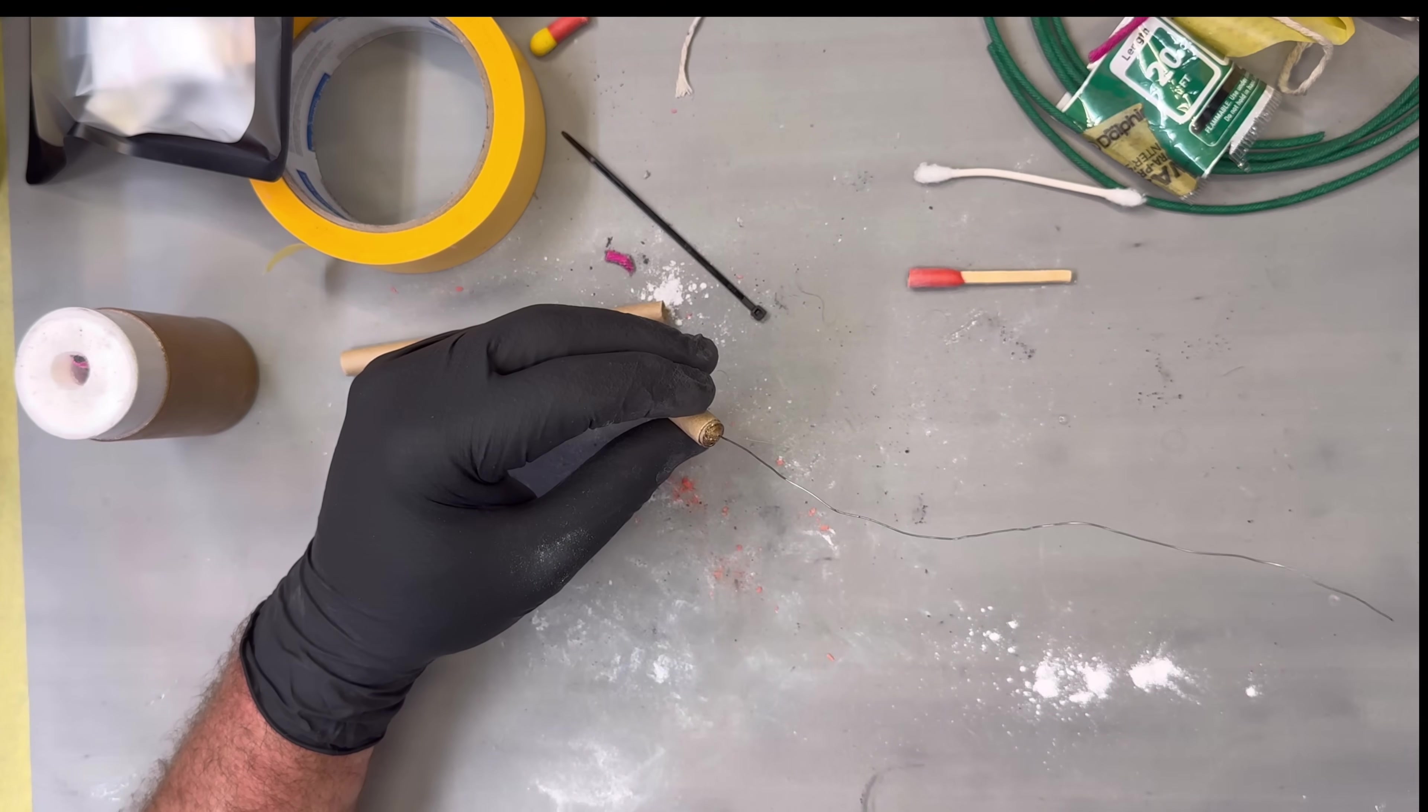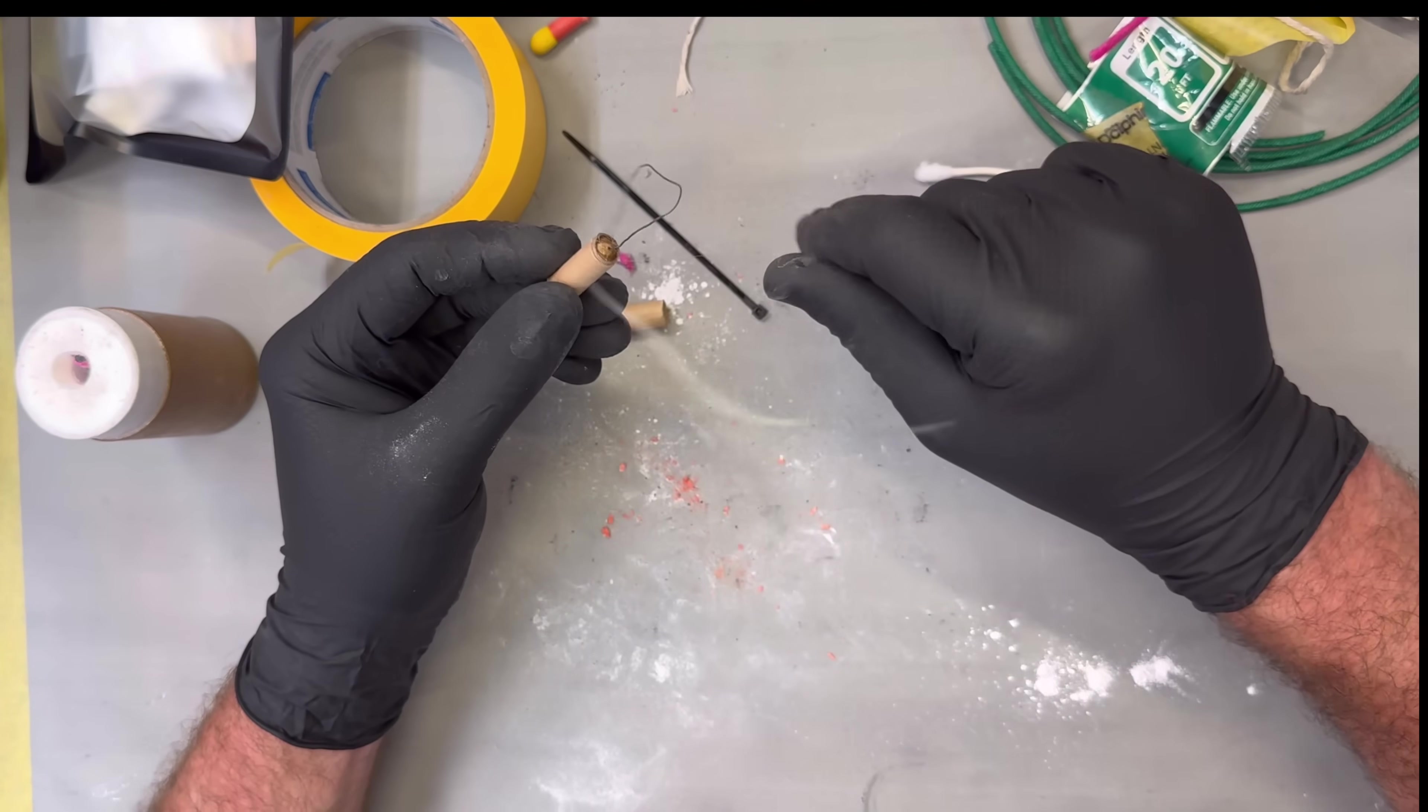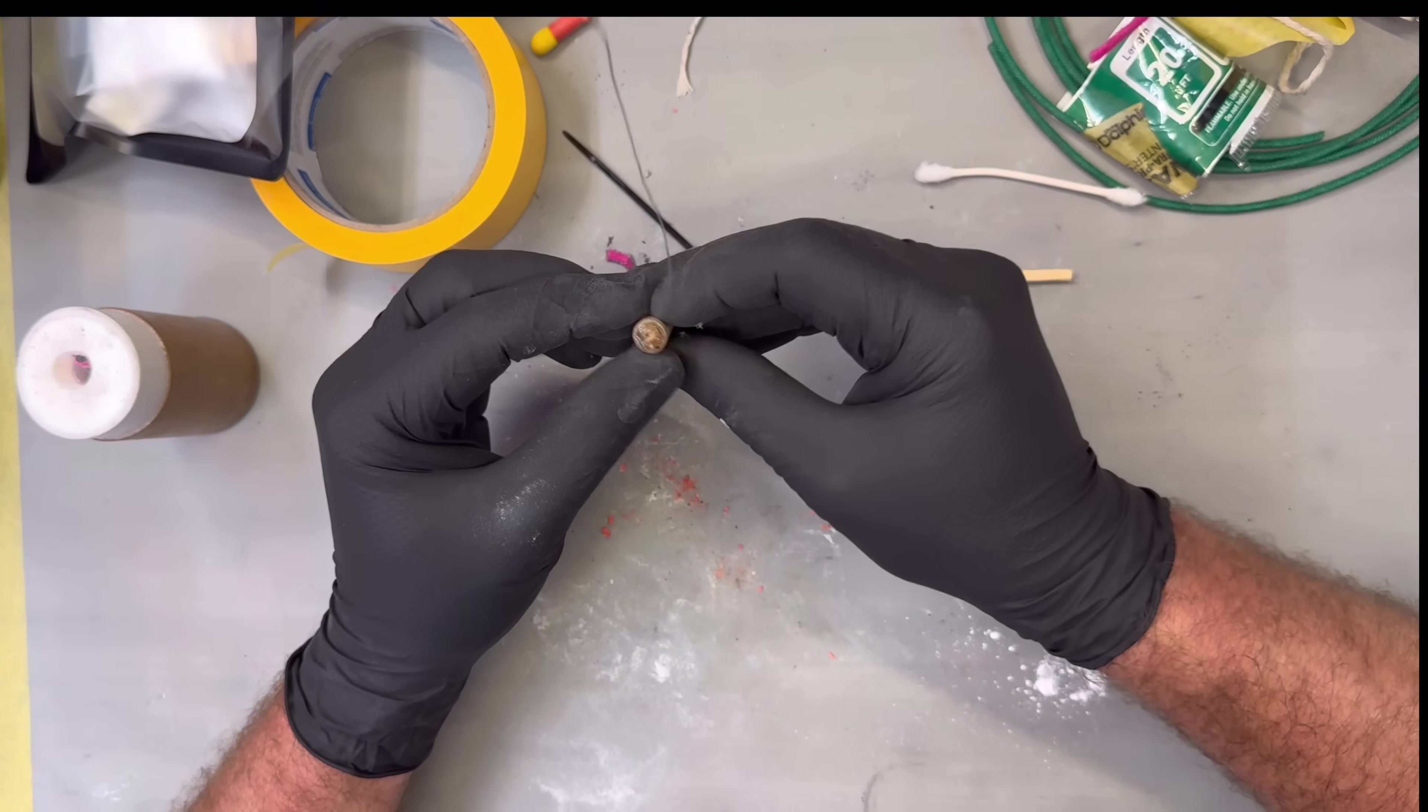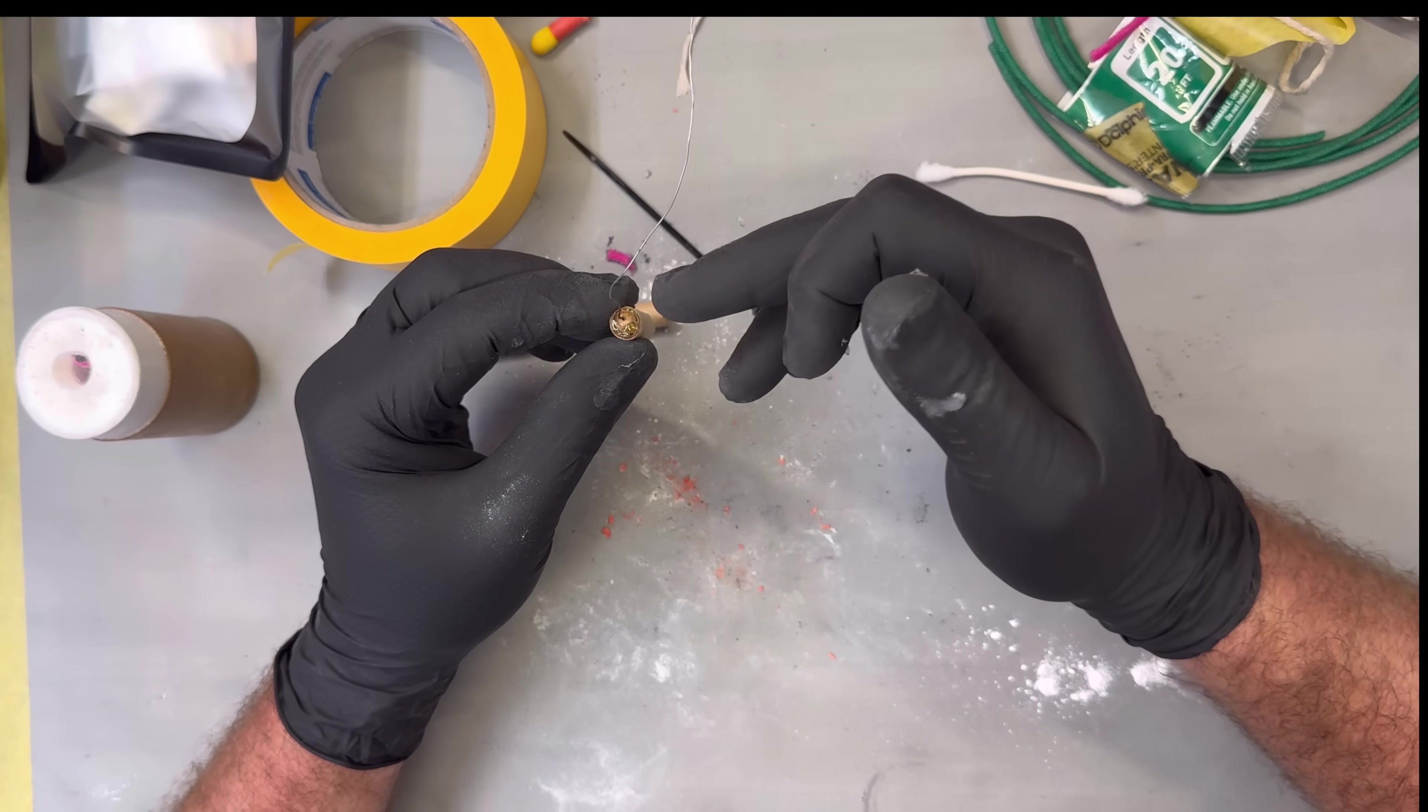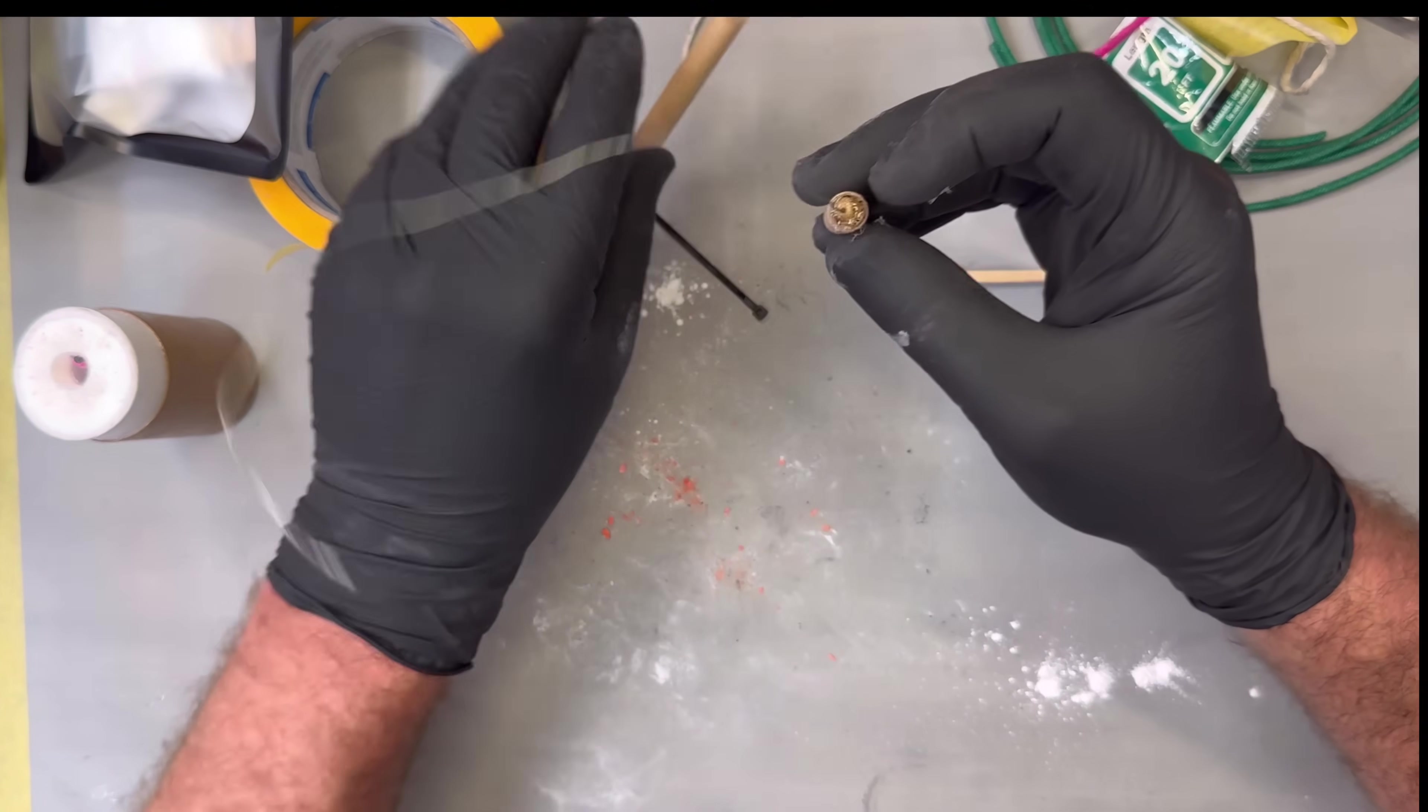These things will eject this ignition system in order to open up that exit orifice a bit more. So we have the igniter cup and the wire pull inside of this 5/16 inch mason bee tube.